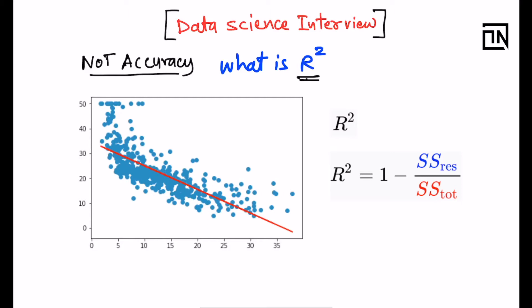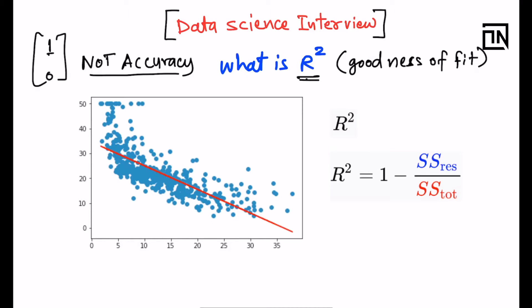If it is not accuracy, then what is R squared value? R squared value is actually goodness of fit. It is a measure to understand how good your model has fit on the given data, on the training data. And since its value varies between 0 to 1, it is often mistaken as accuracy.